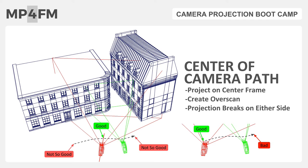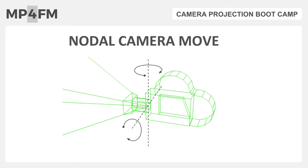One important distinction: I've been saying to set up your projection camera in the middle of the shot camera path, not in the middle of the frame range, because the middle of the frame range isn't necessarily the middle of the shot camera path. There could be more frames at the head or tail, so you have to eyeball where the actual center of the shot camera path is. A camera move where you'll most likely want to use this is when the camera is nodal.